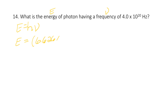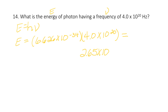So: 6.626 × 10⁻³⁴ times 4.0 × 10²⁰. You can use the EE button or not since it's all multiplication. In the calculator: 6.626 EE negative 34 times 4 EE 20. When you do that, you get an answer of 2.65 × 10⁻¹³ joules. Energy is in joules.